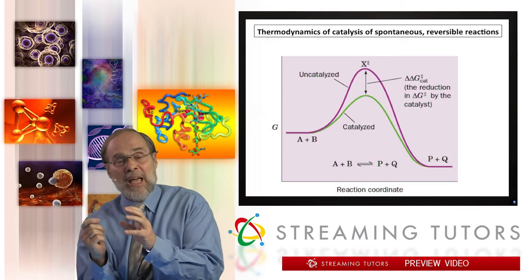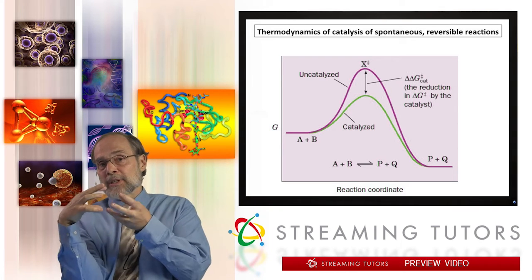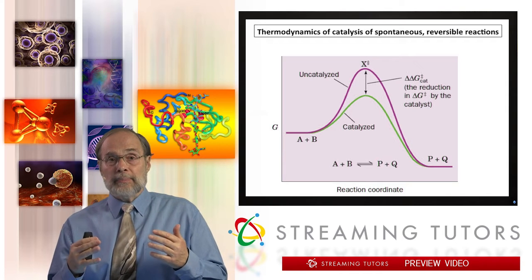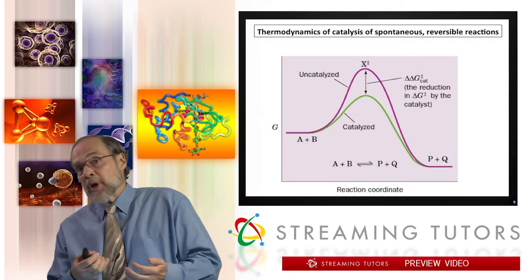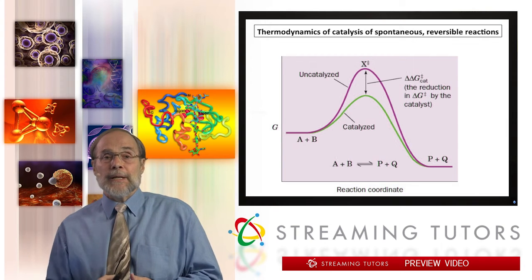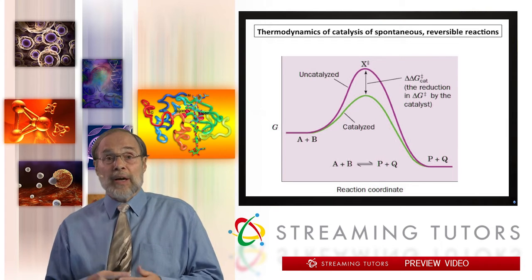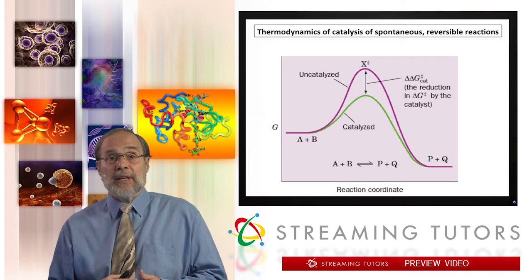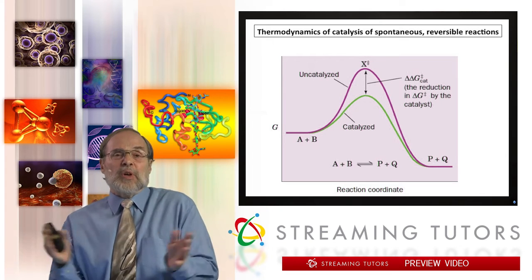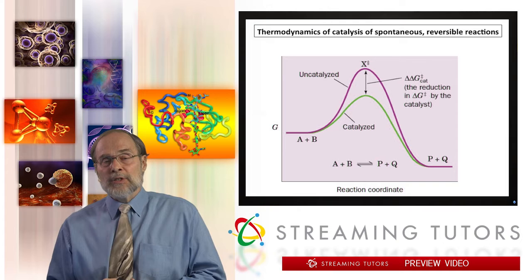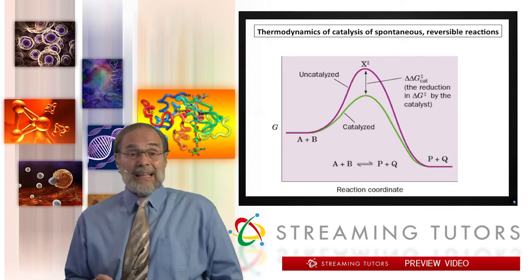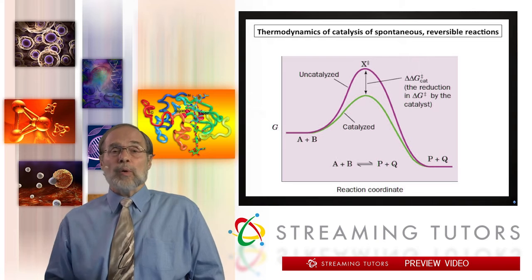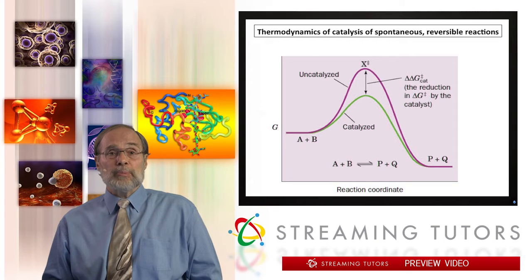And at the same time, positioning side chains to contribute hydrogen ions or abstracting hydrogen ions from the reaction, as you'll see today — with the effect that the effective concentration of reactants is spectacularly high. So these reactions go blindingly rapidly, many, many orders of magnitude faster than they would go spontaneously.